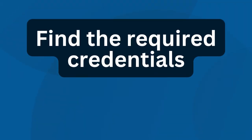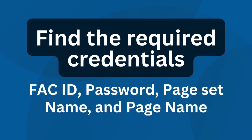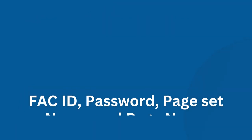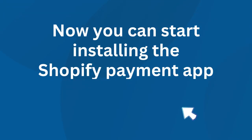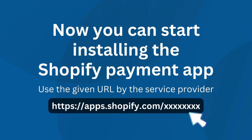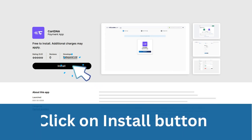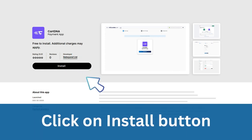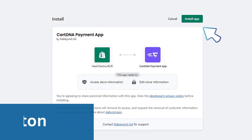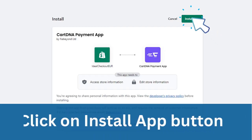Get the FAC ID, password, page set name, and page name from your First Atlantic Commerce account. Now you can start installing the Shopify payment app. Click on the Install button, then click on the Install App button.